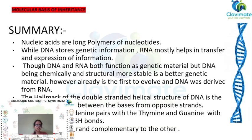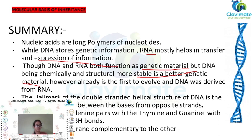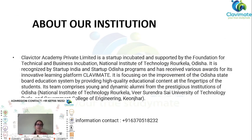By the end of this chapter, we will learn that nucleic acids are long polymers of nucleotides. DNA stores genetic information. RNA mostly helps in the transfer and expression of information. Though both DNA and RNA function as genetic material, DNA being chemically and structurally more stable is a better genetic material. However, RNA is believed to have evolved first and DNA was derived from RNA. The hallmark of the double-stranded helical structure of DNA is hydrogen bonding between bases from opposite strands: adenine pairs with thymine, and guanine pairs with cytosine, with three hydrogen bonds.